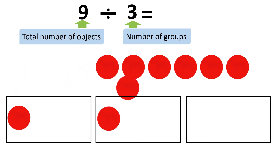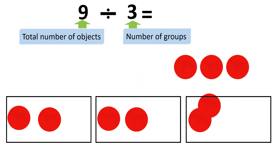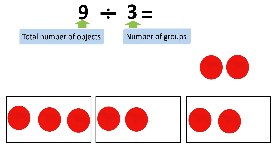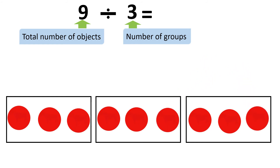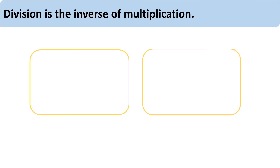Let's begin: one, two, three — one, two, three. I have more counters, so I will divide these as well: one, two, three. When I divide the counters equally, I get three counters in each group. So my answer is 9 divided by 3 equals three in each group.